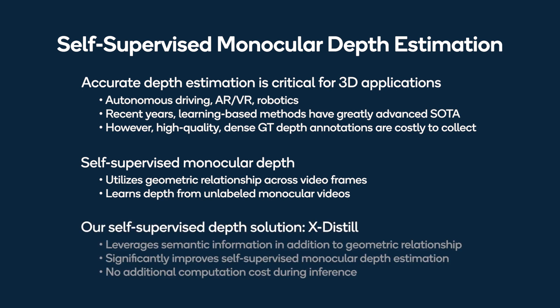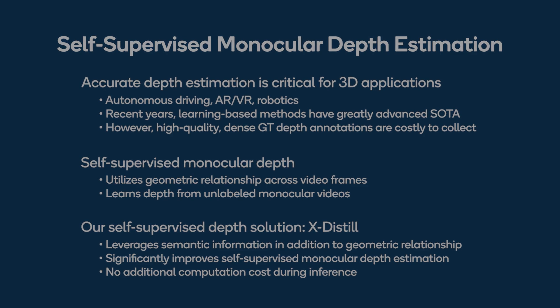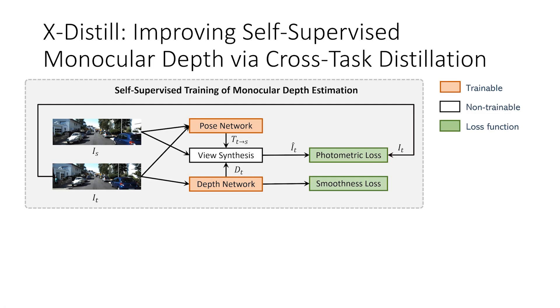While deep neural networks can be trained to predict depth and 3D in an unsupervised way, they are generally too complex to run efficiently on memory, compute, and power-constrained edge devices. In this demo, we propose two complementary novel methods, xDistil and DANA, to address accuracy and efficiency challenges in self-supervised monocular depth.